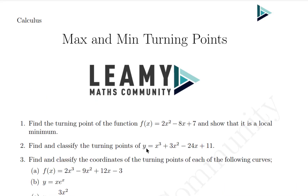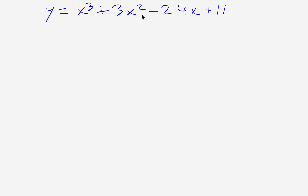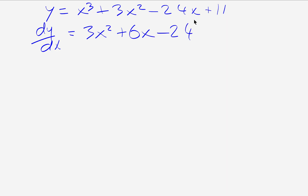We're going to find and classify the turning points of the function y = x³ + 3x² − 24x + 11. To find the turning points I need the derivative and set it equal to zero. So dy/dx = 3x² + 6x − 24, and I set 3x² + 6x − 24 = 0.